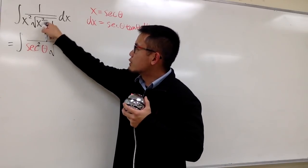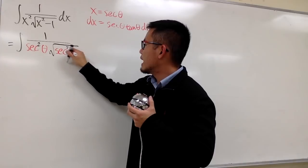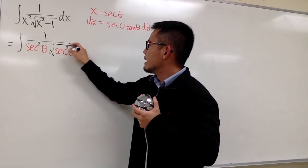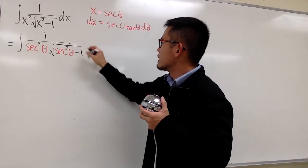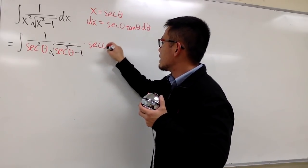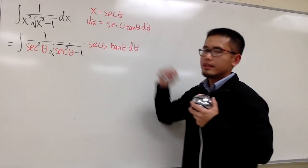Inside, we have x squared, and it's, again, secant squared theta, and then minus 1. And then don't forget to replace the dx with this right here as well. So let's multiply by secant theta tangent theta d theta, like that.